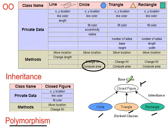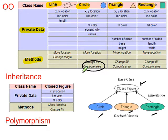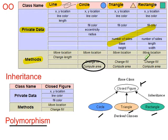Here's another example of some object-orientated classes. We have a class line, circle, rectangle, and object. These are the attributes — the data that's held — and these are some of the methods that you would have. When you're defining these methods, you're actually focusing on the abstraction: the data that's held and the methods that are going to be used.